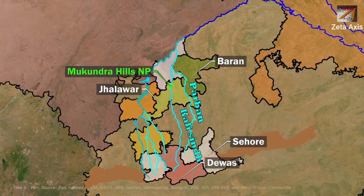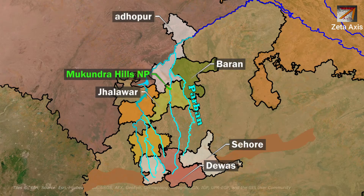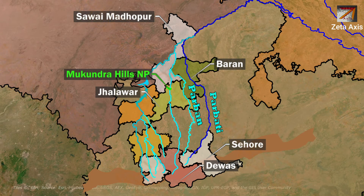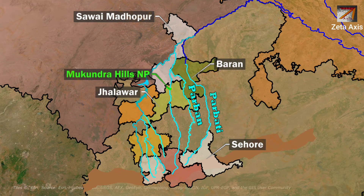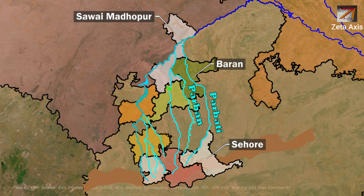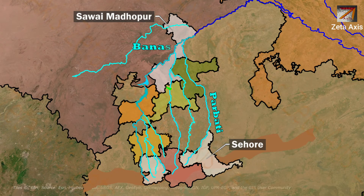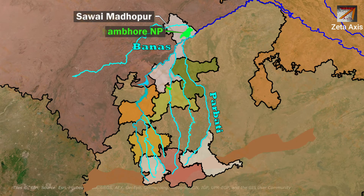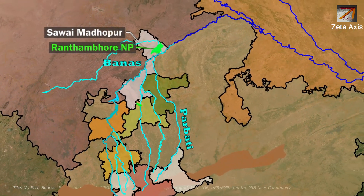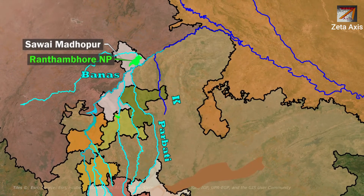The Chambal river from Kota flows into Sawai Madhopur district where the Parvati river joins the Chambal. The Parvati river originates in the Vindhya range in Sehore, flows north, and enters Rajasthan to meet the Chambal in Sawai Madhopur. In Sawai Madhopur, the Banas river also joins the Chambal, and the confluence of the Banas and Chambal is located within Ranthambore National Park. On the borders of MP and UP, the Kuno river joins the Chambal in Sheopur.